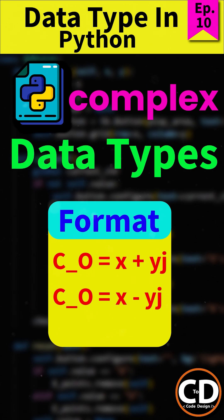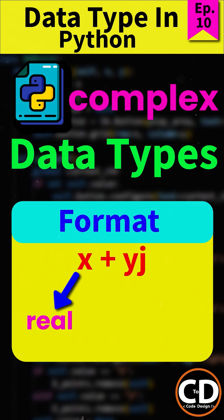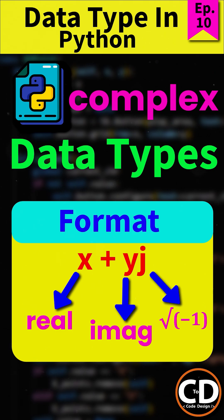The general format of a complex number looks something like this. We have x plus yj, and x minus yj. Here, x is the real part of the complex number, y is the imaginary part, and j represents the square root of minus 1.